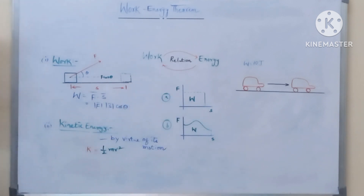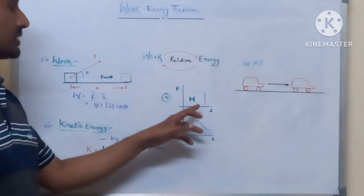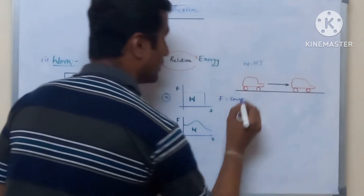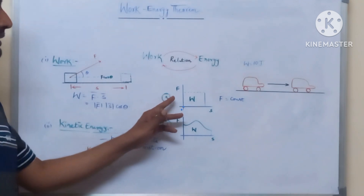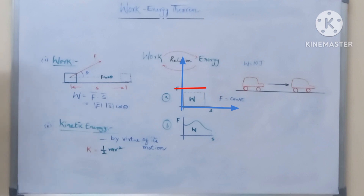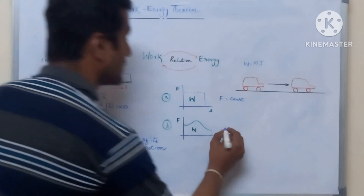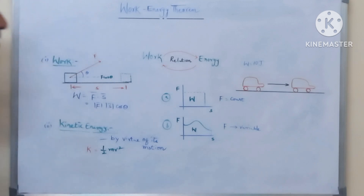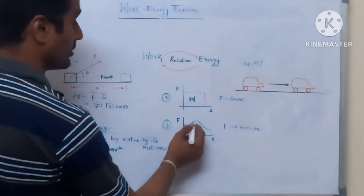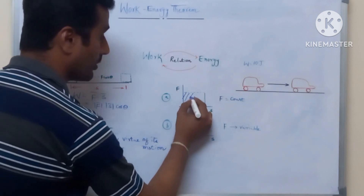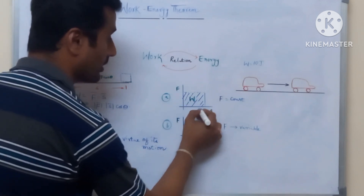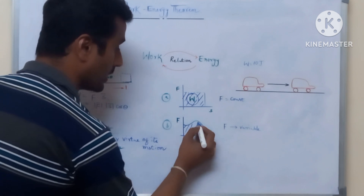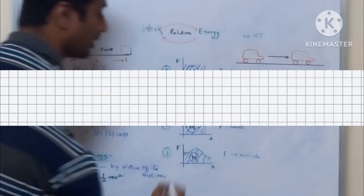In the force versus displacement graph, when a constant force is applied, the graph is a straight line parallel to the displacement axis. When a variable force acts on the body, the graph appears as a curve. The area under the force-displacement graph gives the work done on the body.